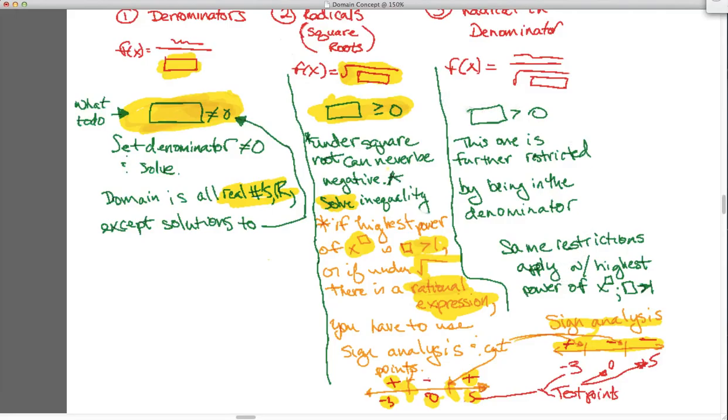So the way we do that mathematically by combining rule one and two, we look at this rule that says just set whatever's in the denominator under the square root greater than zero. If you can do that, then solve the inequality if it's the power of x of one. But if it's greater than one, do your sign analysis. There will be a video dedicated to sign analysis by itself, then you're good to go. So three things to keep an eye out for: denominators, radicals, and radicals in the denominator.